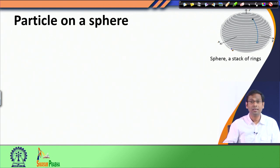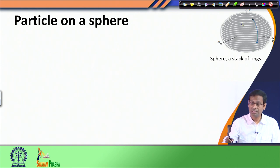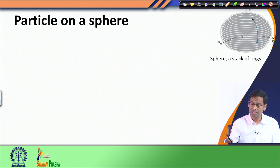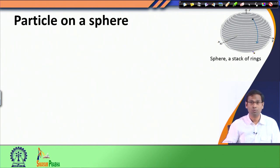In the particle-on-a-sphere problem, not only can the particle move around the x-y plane as in the ring, but it can also move from one ring to another. This means all three Cartesian axes — x, y, and z — are operational or active.